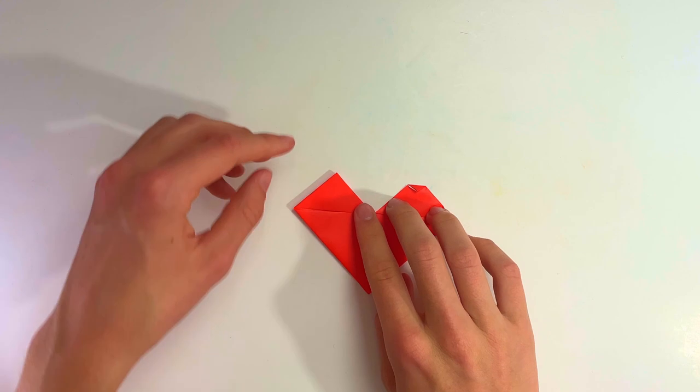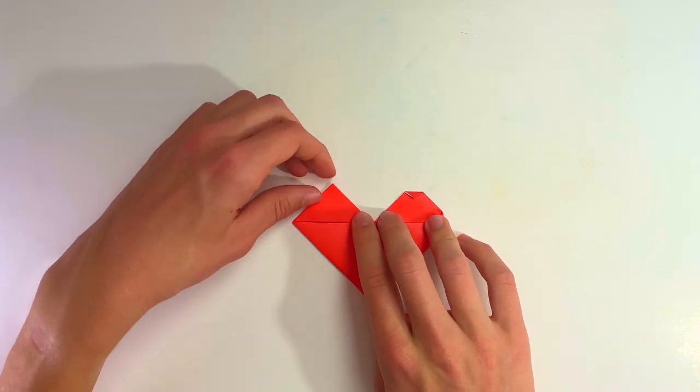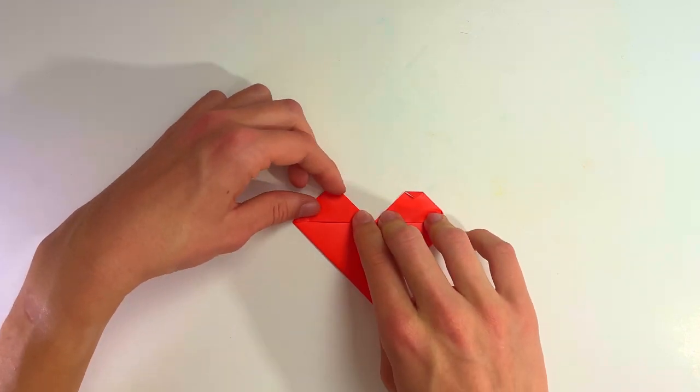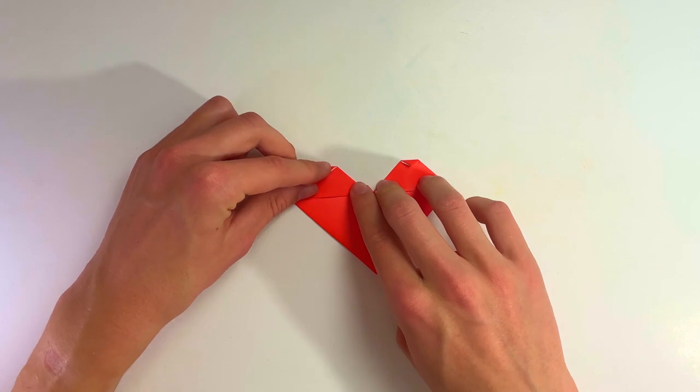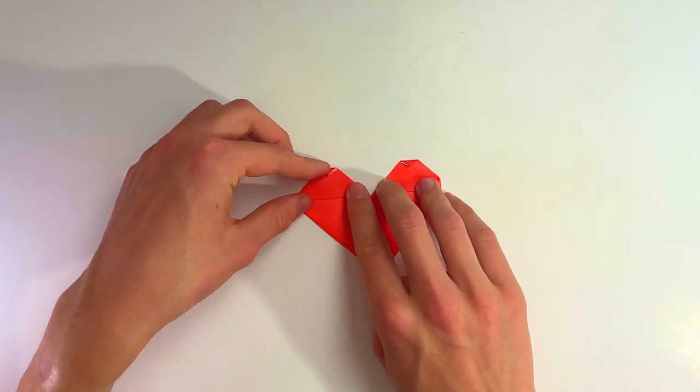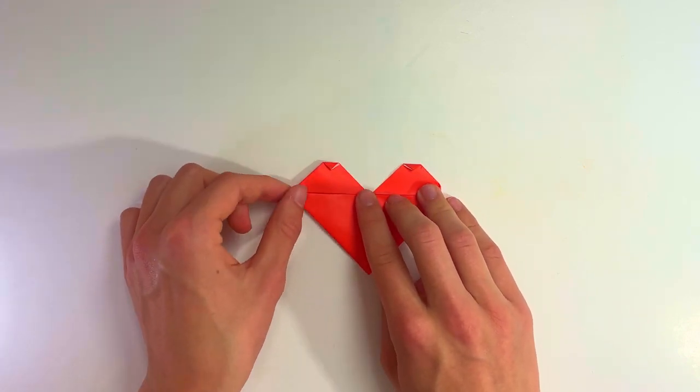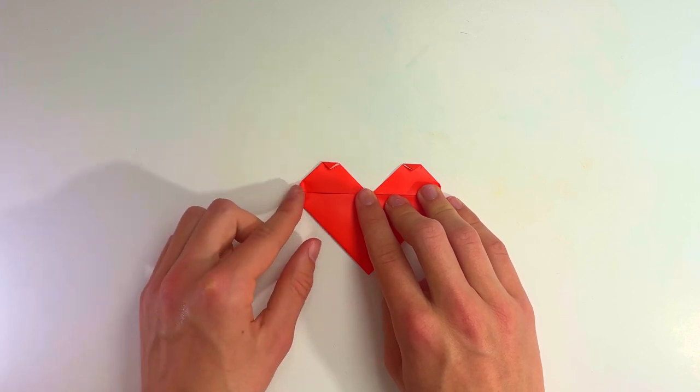Now we're going to do the same thing here. Bring the tip down a bit and flatten. Do the same thing on the left side—take the left tip and tuck it back inside.